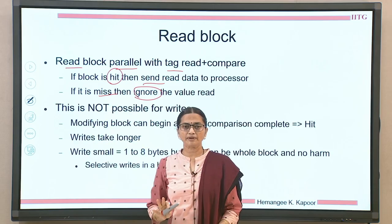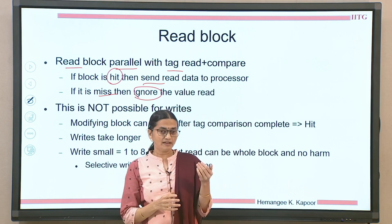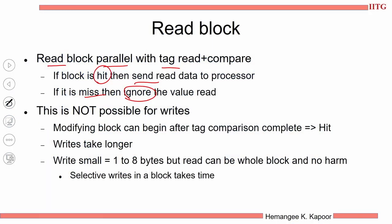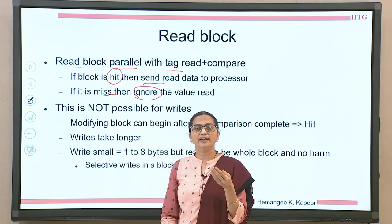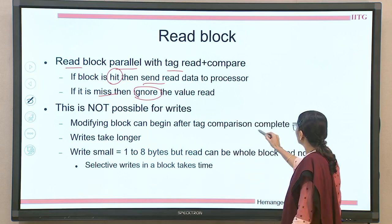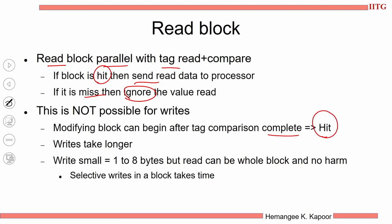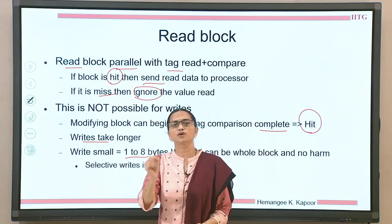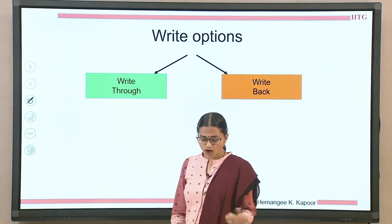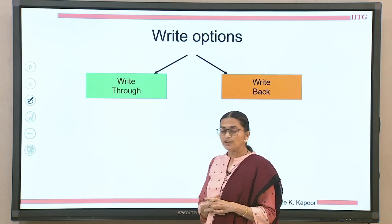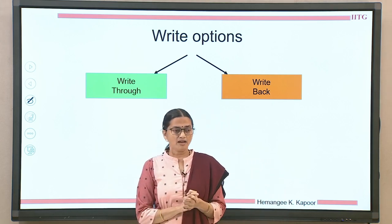Start reading the block in parallel to the tag compare. But this parallel approach is not possible in a write. Why? Because write is going to modify the data and if your access happens to be a miss, you would have modified a wrong location. So you are not permitted to start writing until the hit or miss decision has been established. You need to wait for the hit or miss to be decided — that is the first hurdle. Then writes are going to take more time: you have to first identify the location, then write only one or eight bytes. You are not going to modify the complete block, just a few words. So writes are small and they do take time.